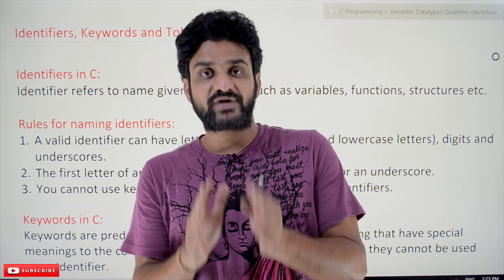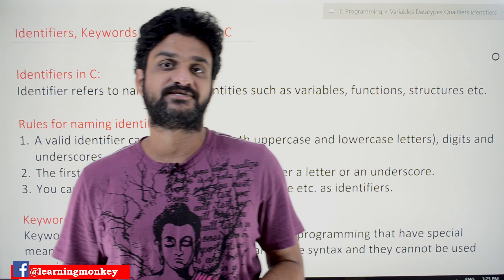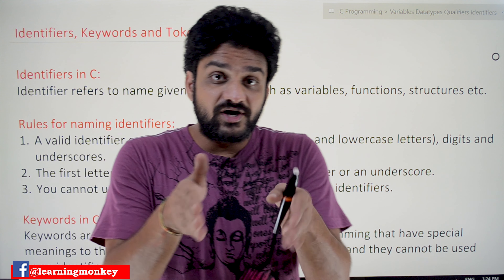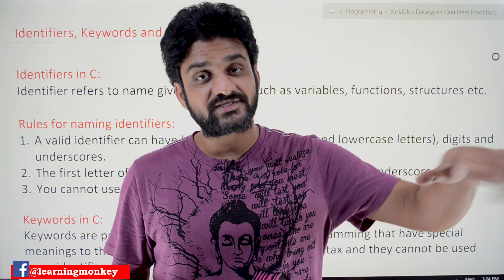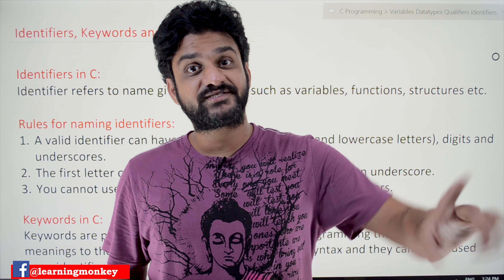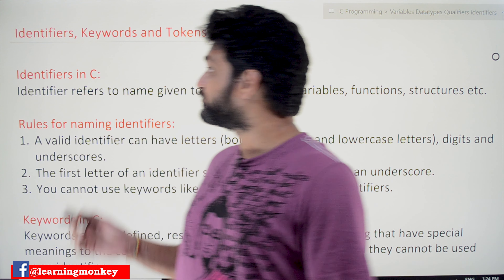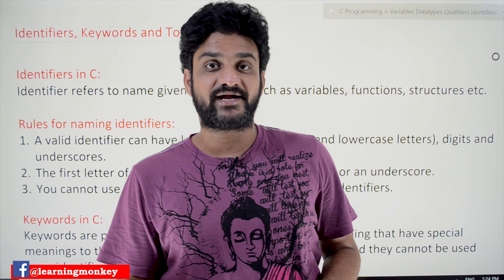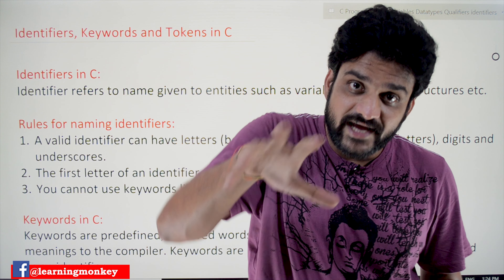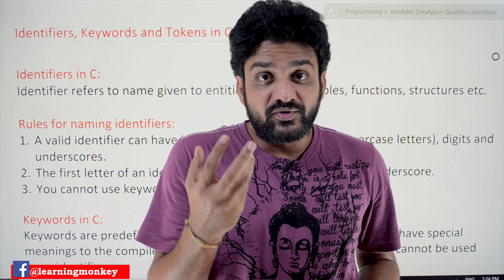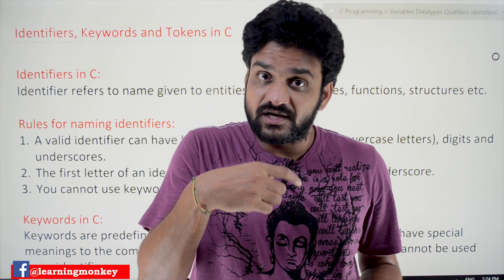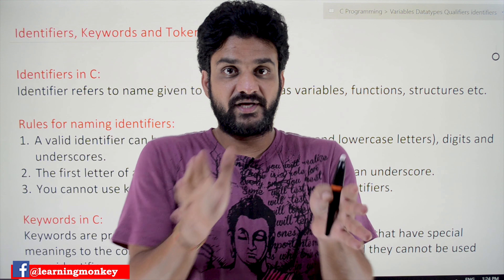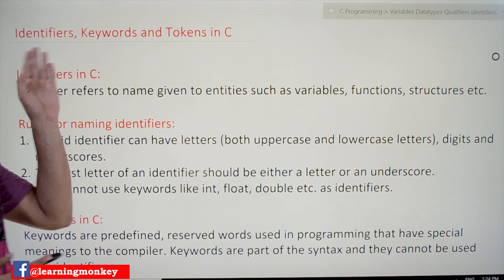Similarly, it applies to programming languages also. Any programming language is constructed from a character set. C also is constructed from a character set. The kind of characters involved in the C programming language are: uppercase alphabets, lowercase alphabets, digits 0 to 9, and special characters — like parentheses and semicolons. Whatever program we write, its content should be from those character sets only.